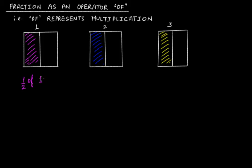This pink block is half of one, where one is the whole first rectangle. Similarly, this blue block — the half of the second rectangle — also represents half of one, that is one unit. We will bring the third rectangle into our discussion after some time.